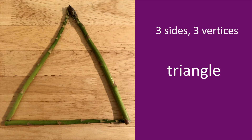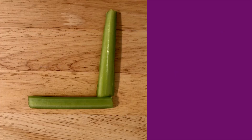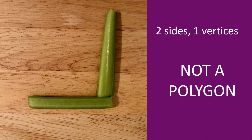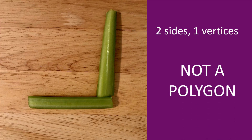because it is called a triangle. A triangle has three sides and three vertices. When we look at this next shape, it has two line segments and one vertex. It is also not a closed shape. Therefore, it is not a polygon.